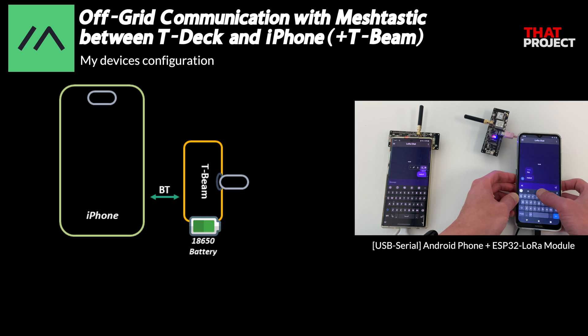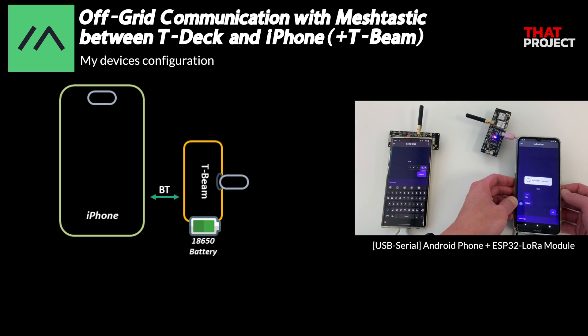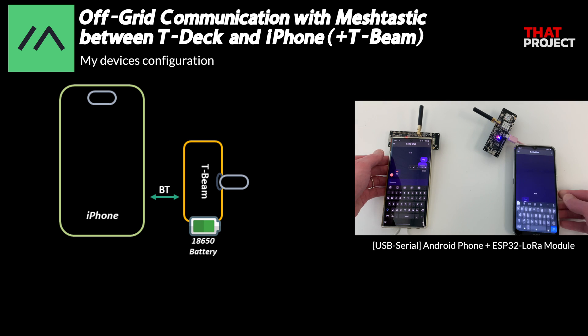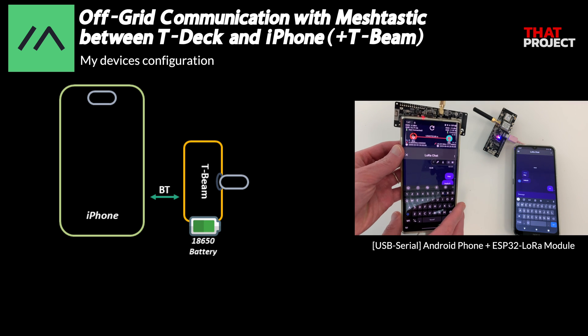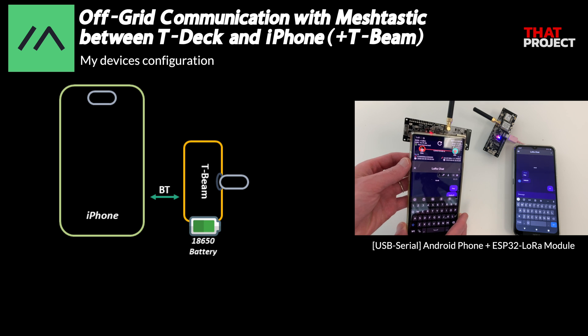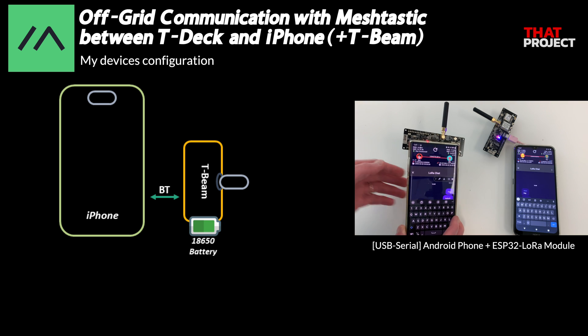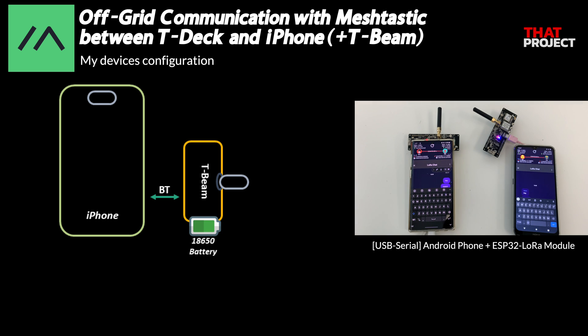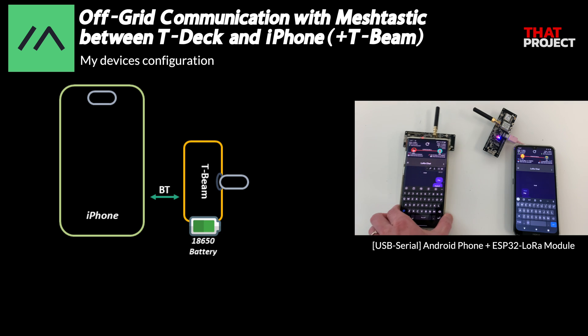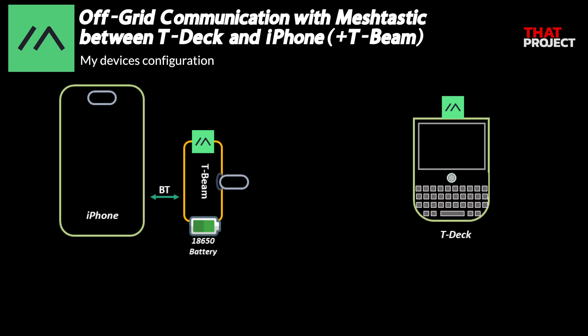One issue — since it's connected via Bluetooth, we need to power it separately. Because I didn't like this, in my previous projects I used UART serial communication by connecting the mobile and the device with a cable. However, since UART serial communication is not possible on iPhone, Bluetooth is the only way. I installed Meshtastic's firmware on both T-Beam and TDEC, which makes everything very simple to use.